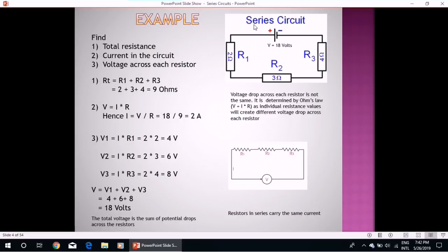Now example. We are given a series circuit in which three resistances are connected together in series. The values of each resistance is different. R1 is 2 Ohm, R2 is 3 Ohm, R3 is 4 Ohm, and applied potential difference is 18 volts.